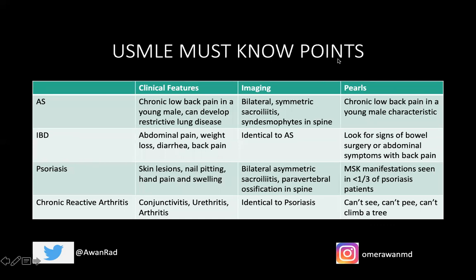The must-know USMLE points: For ankylosing spondylitis — if you have back pain in a young male in their 20s or 30s, always think AS. They can also develop restrictive lung disease with low lung volumes due to ankylosis of the costovertebral and costosternal joints along the rib cage. Imaging shows bilateral symmetric sacroiliitis — just like IBD — and syndesmophytes in the spine. Peripheral arthritis is in the shoulder or hip, not the hands or feet. Chronic low back pain in a young male: think ankylosing spondylitis.